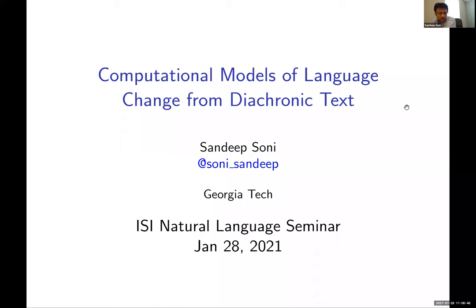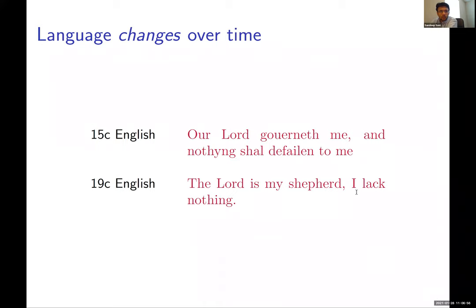I want to talk about models of language change from diachronic text data. To motivate what I mean by language change, here's a snippet of text taken from the Bible — the 23rd Psalm — comparing 15th century English and 19th century English. You can see a marked difference between these snippets of text. This is an instance of language change that has happened over centuries.